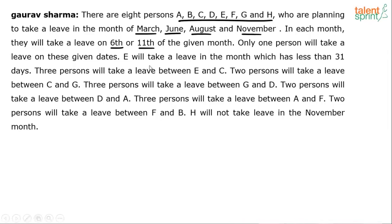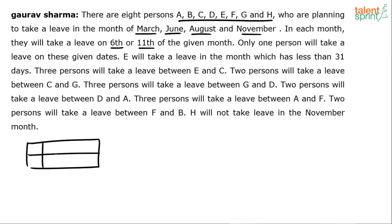One way to try this is to draw a rectangular block. These are the months — March, June, August, and November — and the dates are the 6th and 11th. The positions are numbered 1 through 8 in order. You have to go in this direction when filling up the cells — 1, 2, 3, 4, 5, 6, 7, 8.